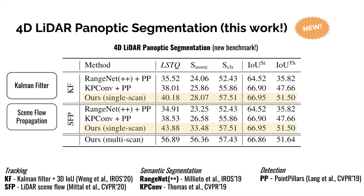As can be seen, our method that processes several scans in parallel performed significantly better in terms of association, and is on par with our single-scan variant in terms of semantics. Overall, our single-stage unified network significantly outperforms tracking-by-detection baselines and does not need any external methods or networks for temporal association. We provided a detailed analysis of our model in the paper.